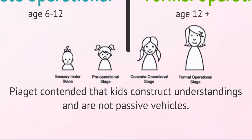Piaget contended that kids construct understandings and that they're not passive vehicles. A teenager's developing ability to reason gives them a new level of social awareness and moral judgment. For early teens and young adults, their reasoning is self-focused — thinking that their private experiences are unique, assuming parents can't understand, and thus focusing on peers for advice and support. Imagine when their Facebook network is massive, the conflicting advice that they receive.